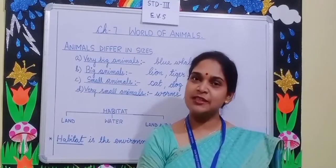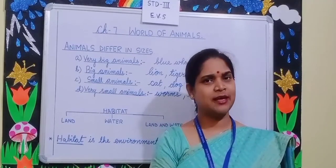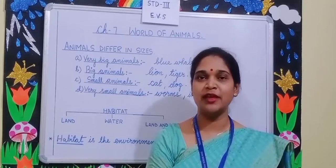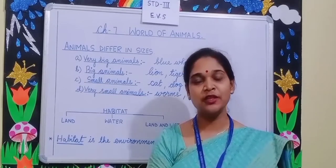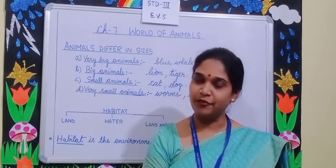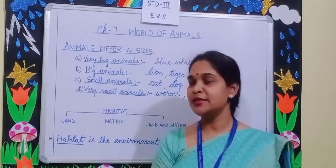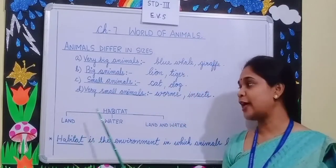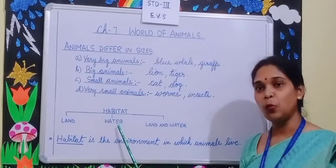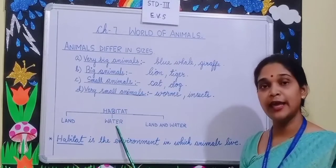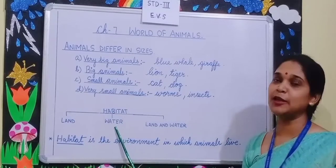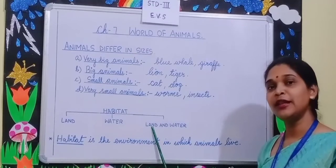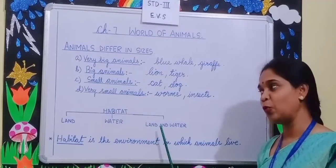Habitat. What is habitat? Habitat is the environment in which animals live. Some animals live on land, some in water — they are also called aquatic animals. Some animals live both on land and water.